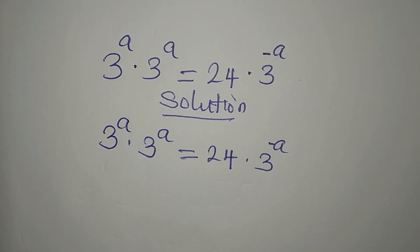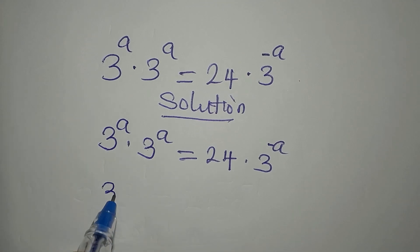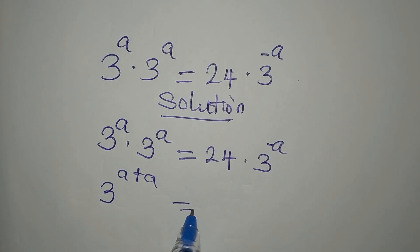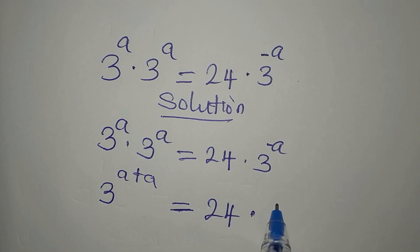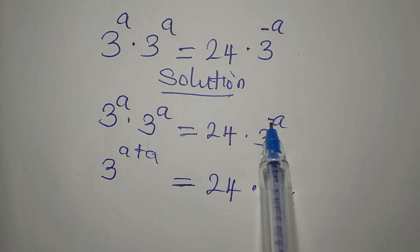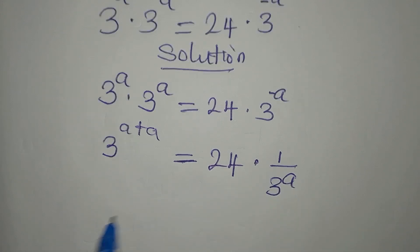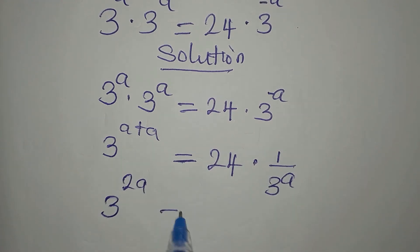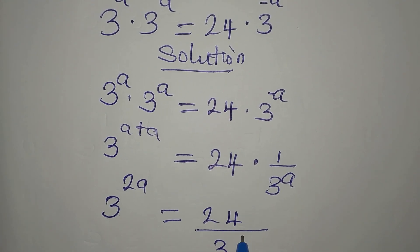Now if you want to take a step further, we have a here and a here — we have the same base, so we can pick the base and add the powers. Then on the other side, we have 24 multiplied by 1 over 3 to the power of a. If you remove the negative, then you have a fraction there. We can multiply the right hand side, so we have 3 to the power of 2a — that is a plus a — equals 24 over 3 to the power of a.